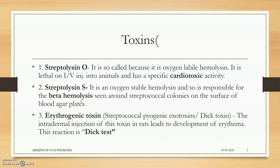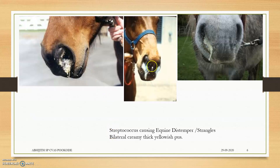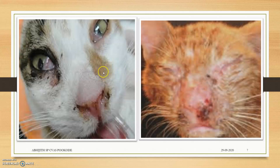Streptolysin S causes lysis of red blood cells. The third toxin is erythrogenic toxin, which generates erythema — that is why it is called erythrogenic. The Dick toxin: intradermal injection of this toxin produces erythema in susceptible individuals. It is also noted in Streptococcus causing glanders-like infections in equines.